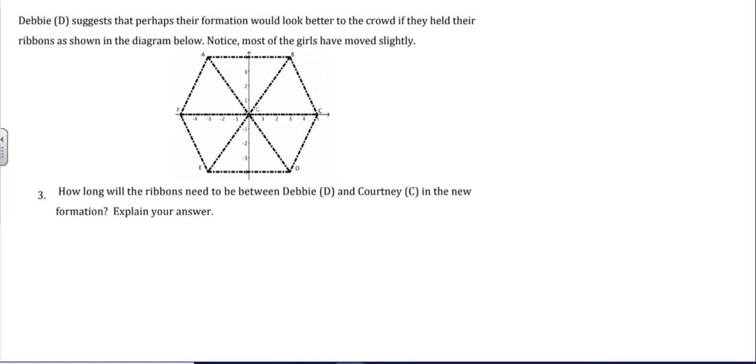So what we need to do is we need to find the length of the segment DC. And to do that, we're going to use the Pythagorean Theorem. So the Pythagorean Theorem is A squared plus B squared equals C squared. So you use the Pythagorean Theorem to find the missing side of a right triangle. A and B represent the legs of the right triangle, and C represents the hypotenuse, which is the longest side of the right triangle, and across from the right angle.